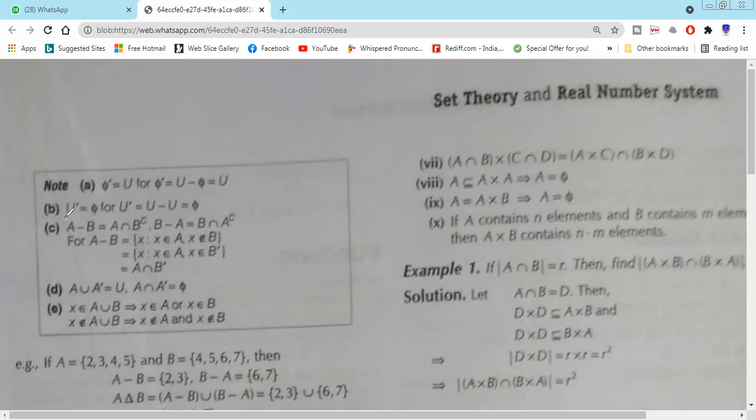Next property: what is μ'? Which is φ, because μ' equals μ minus μ, which is φ, the empty set. So you have to remember these two results: μ' equals φ and φ' equals μ.